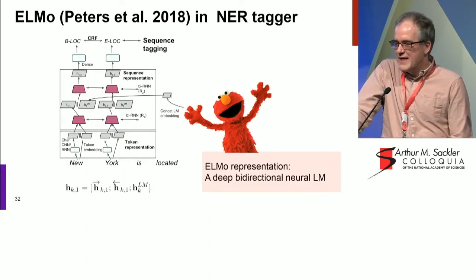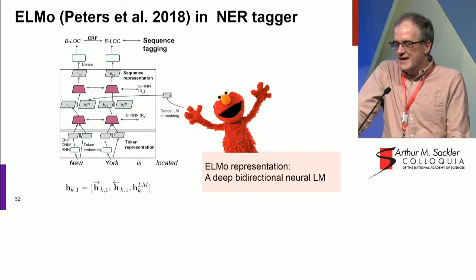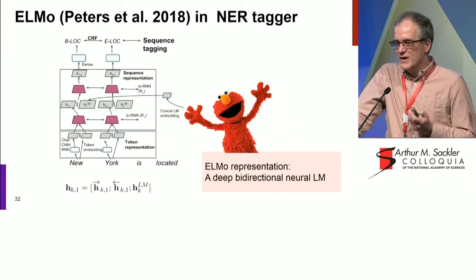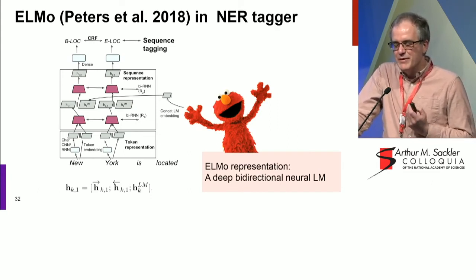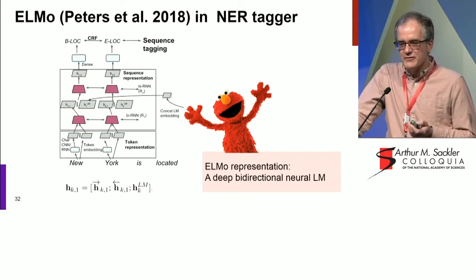People have now exploited that idea to say maybe we could just train very large neural language models and let them provide the meaning of words in context. And that will be a very useful representation that could be used for all kinds of tasks.